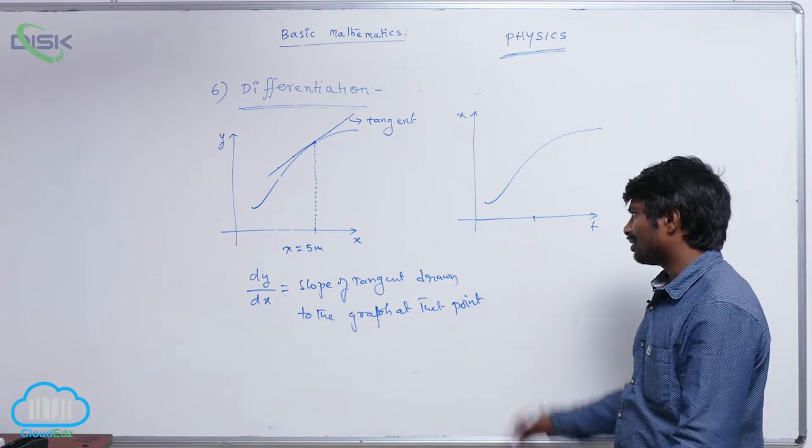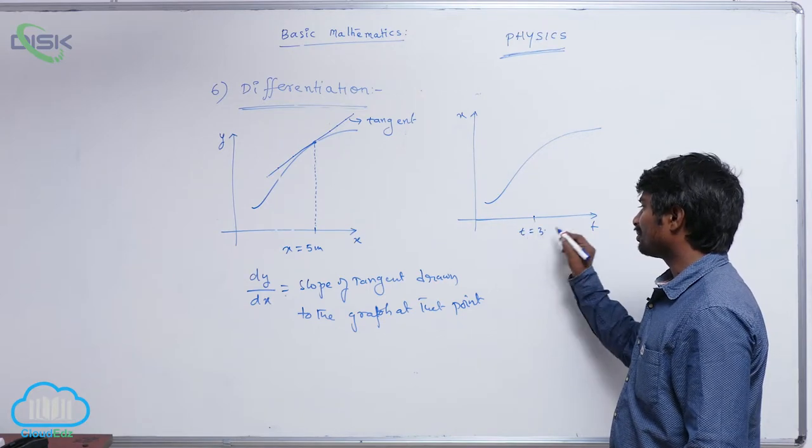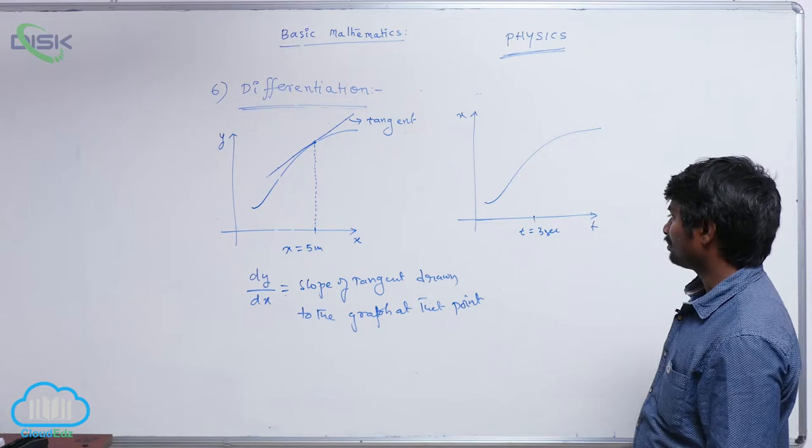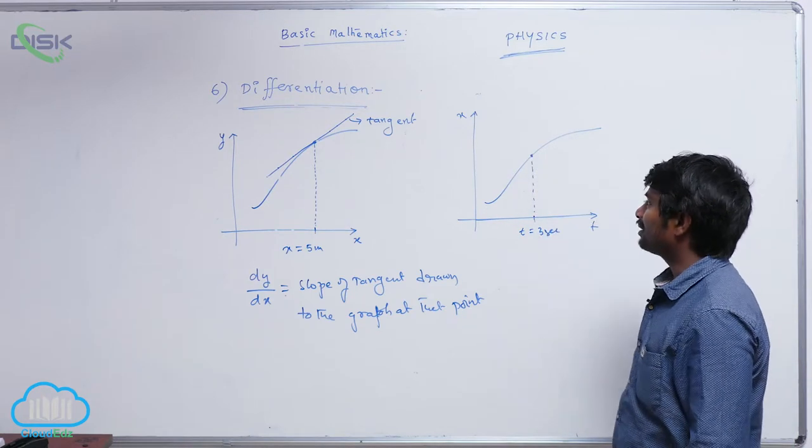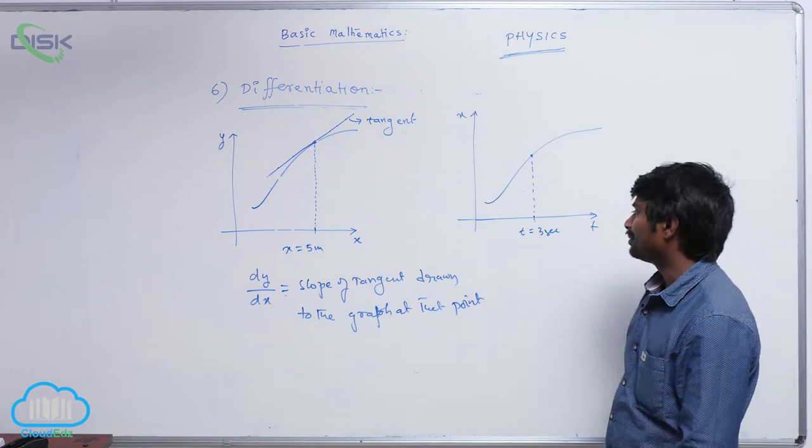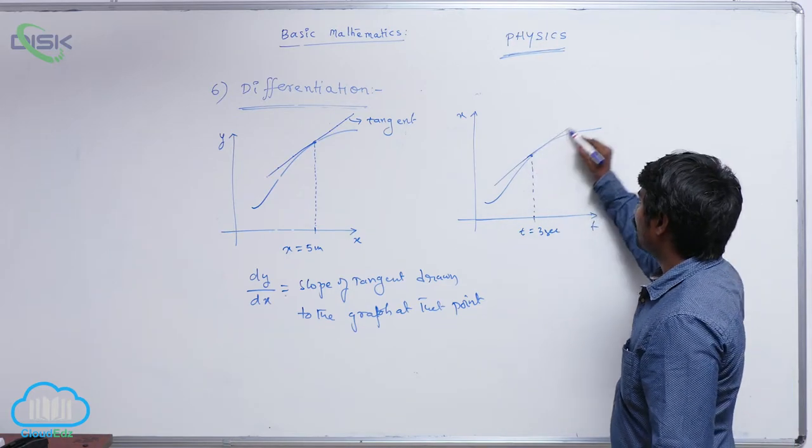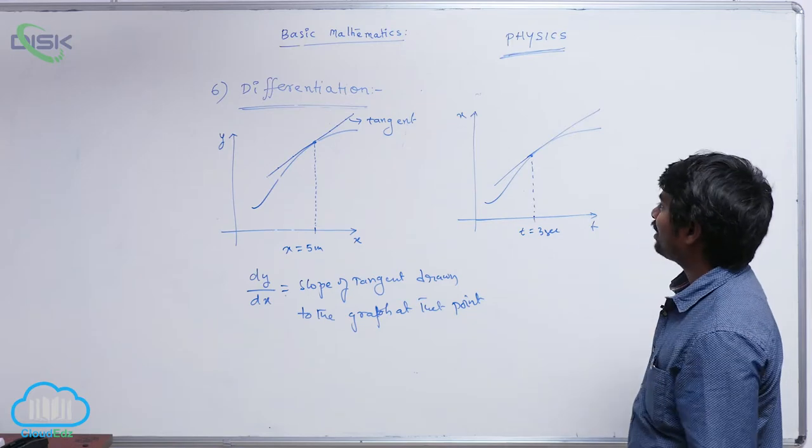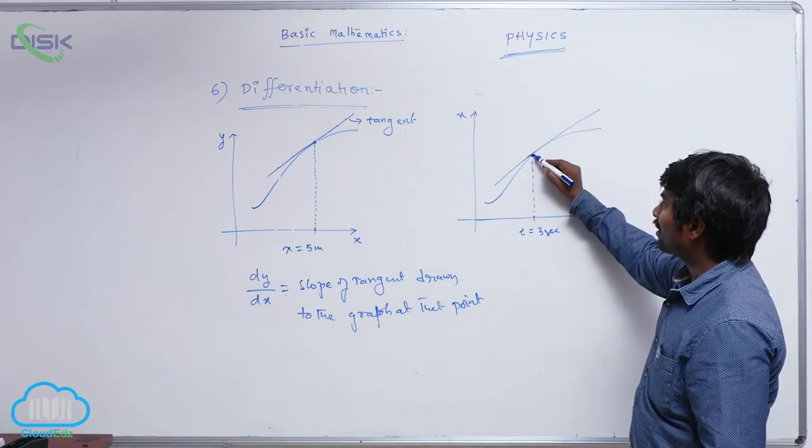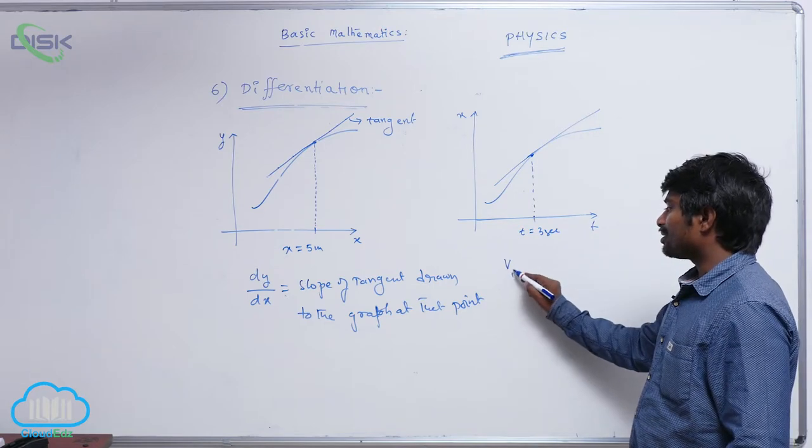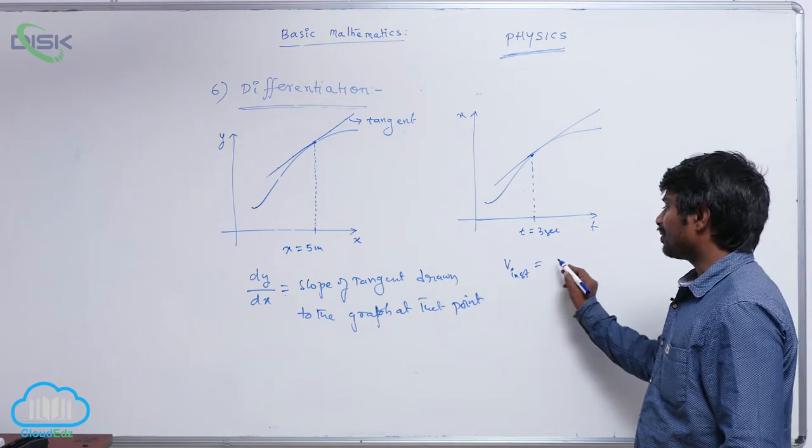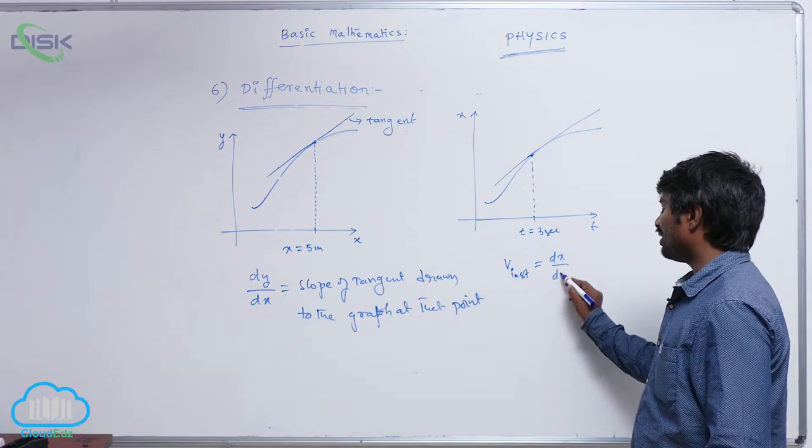t equal to, this is time axis. So you will be having time values at t equal to 3 seconds for example. So I will go for identifying this point and at that point what I do? I draw a tangent and I will calculate the slope of this tangent.